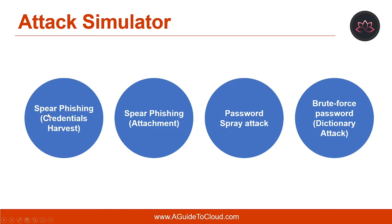Spear phishing, also known as credential harvest, is focused on a more targeted attack that is aimed at a specific group of individuals or an organization. Spear phishing targeted towards attachment is another form of spear phishing simulation focused on exploiting an attachment to an email. A password spray attack against an organization is typically used after a bad actor has successfully enumerated a list of valid users from the tenant, utilizing their knowledge of common passwords used. It is widely used as it is a cheap attack to run and harder to detect than brute force approaches.